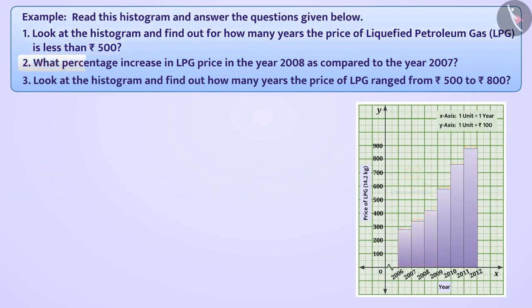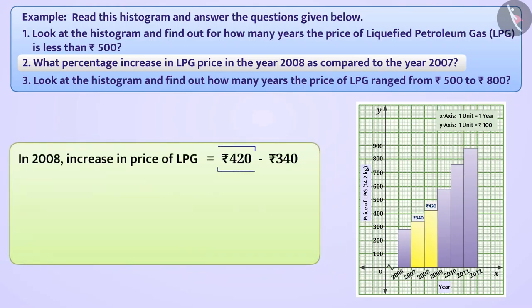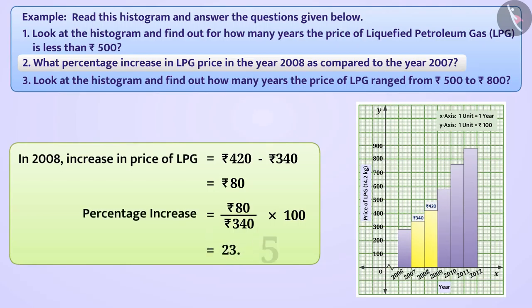Can you tell what is the percentage increase in LPG price in the year 2008 compared to year 2007? The price of LPG in 2008 is 420 rupees and in 2007 the price is 340 rupees. The price increased by 420 minus 340, which equals 80 rupees. Since this increase is measured from a base of 340 rupees, the price of LPG has increased by 23.53 percent.